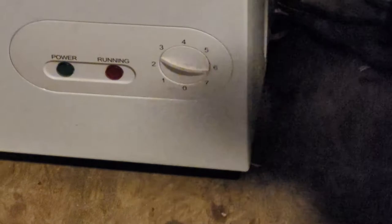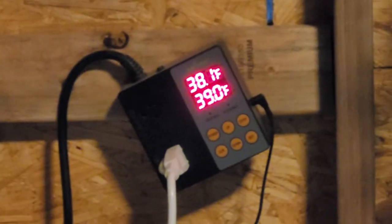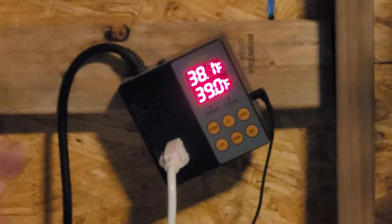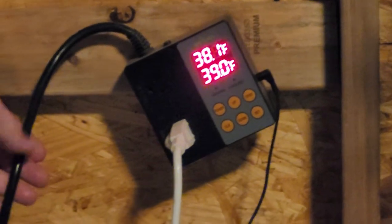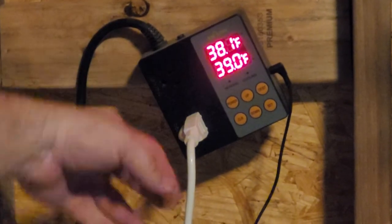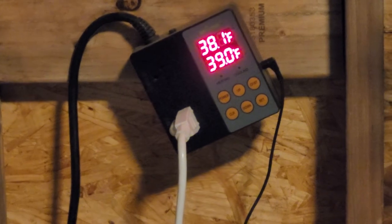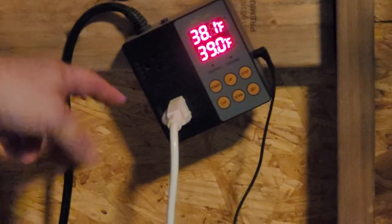We bought this thermostat from Amazon. This is a dual range thermostat. What that means is: this cord here plugs into the power, and this cord comes directly out of the freezer.